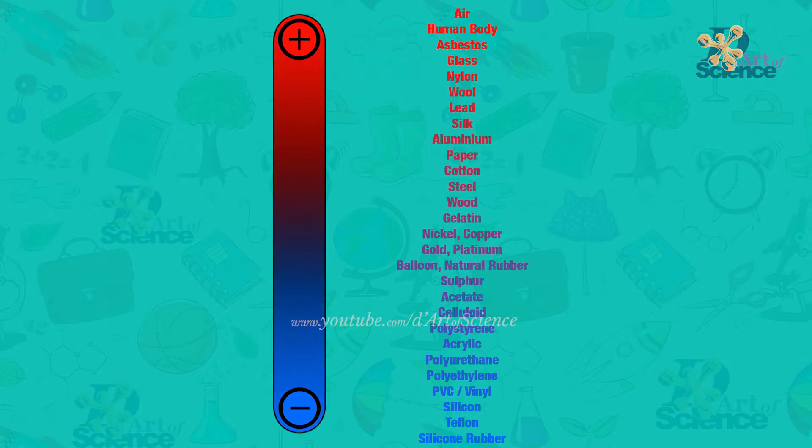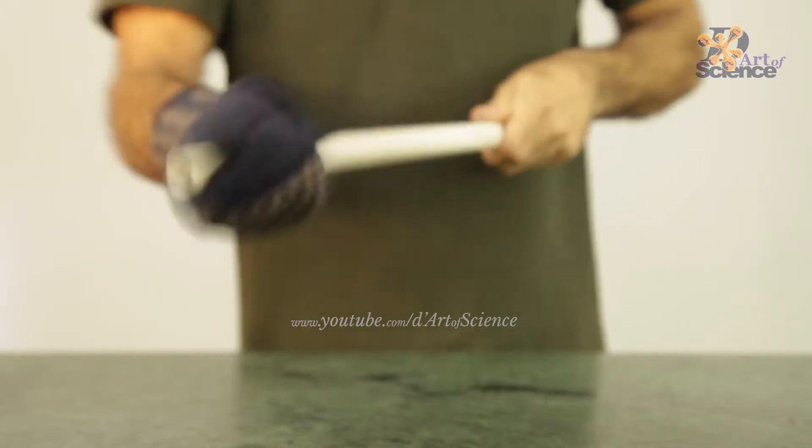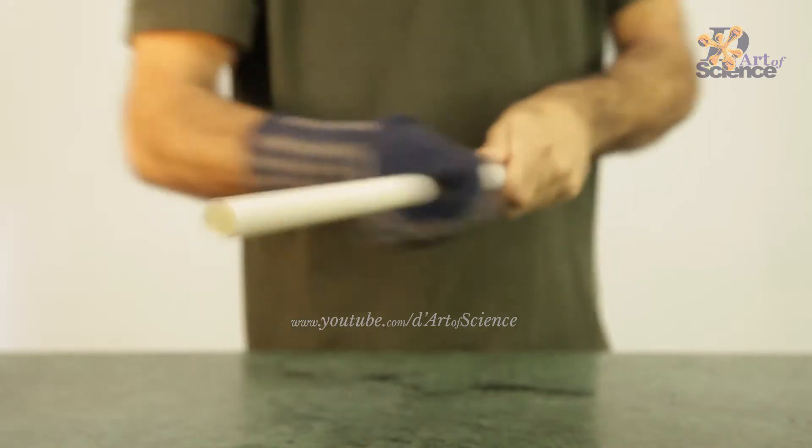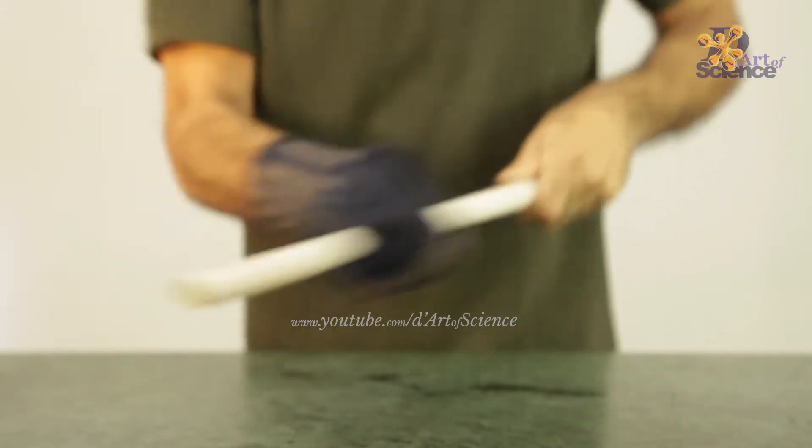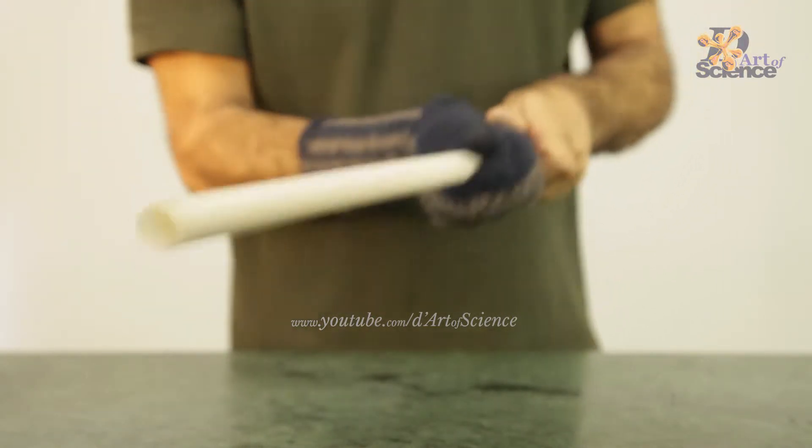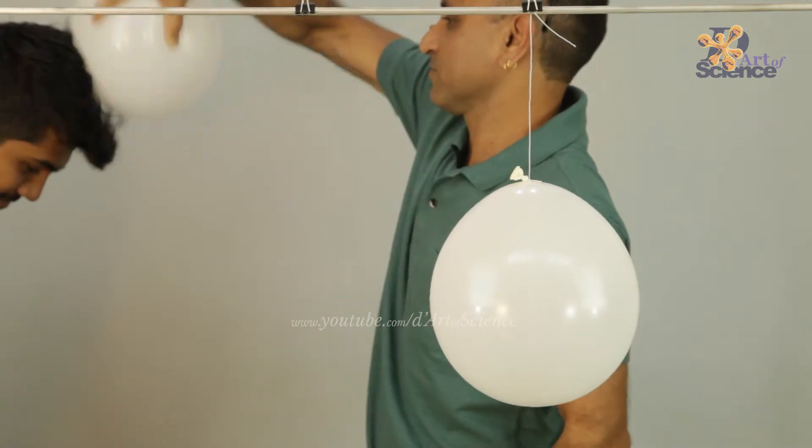In the case of a glass rod and silk cloth, glass gets positive charge and the silk is left with a negative charge. Even plastics like acrylic get a positive charge. But when plastics like polythene or PVC pipes are rubbed with cloth, the plastic gets a negative charge and the woolen cloth gets a positive charge. The balloons also get a negative charge.